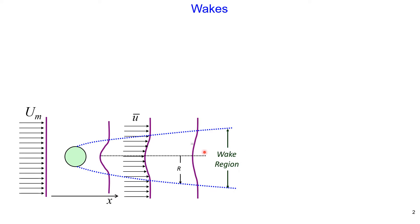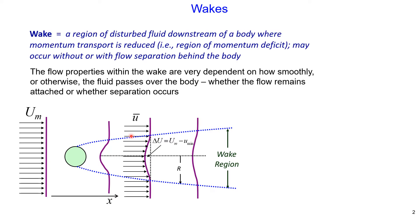Within the wake region we have a deficit velocity, defined as the difference between the approaching velocity and the minimum velocity behind the structure. Along the longitudinal axis, the deficit velocity delta-u is reducing. Wake is a region of disturbed fluid downstream of a body where momentum transport is reduced — it is a region of momentum deficit.